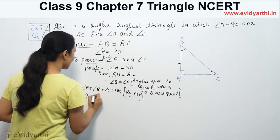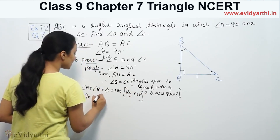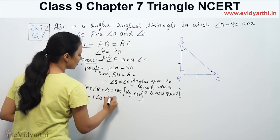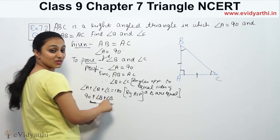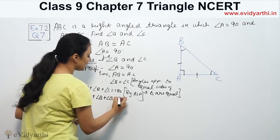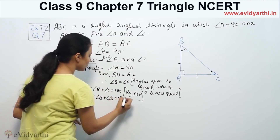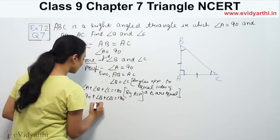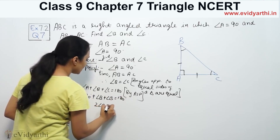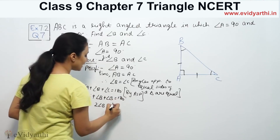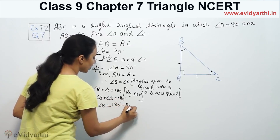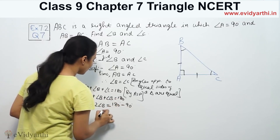Angle A is 90 degrees, and B and C are equal. So: 90 plus 2 times angle B equals 180. Therefore, 2 times angle B equals 90, which gives angle B equals 45 degrees.